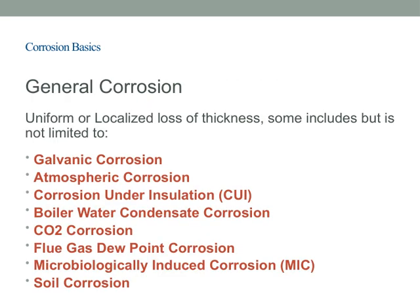When we talk about general corrosion, we're referring to the uniform or localized loss of material thickness over a surface. This can happen in various forms. Some of the most common include galvanic corrosion, which occurs when two different metals are in contact in a corrosive environment. Atmospheric corrosion is another widespread type, caused by exposure to air and moisture, leading to rust and degradation over time. We also see corrosion under insulation (CUI), where moisture gets trapped beneath insulation materials, causing hidden damage.